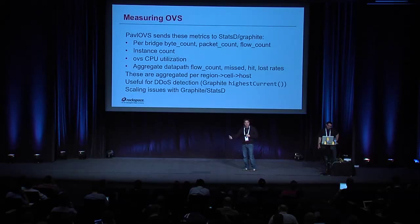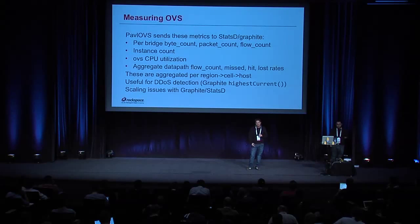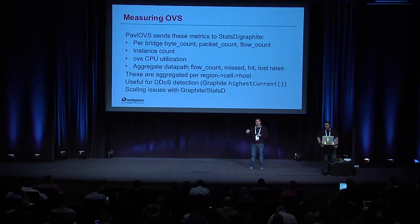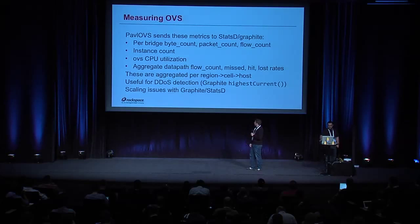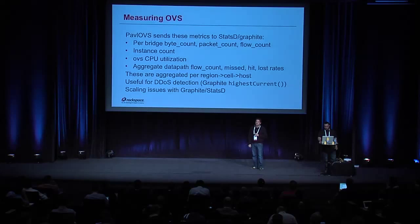We aggregate these metrics at the region, cell, and hypervisor level so you can get whatever granular view you need. It's really useful for DDoS protection — if somebody spikes and is orders of magnitude above other customers, there's a good chance they're a DDoS target. However, at our scale we're having problems scaling Graphite and StatsD to accommodate, because this is a ton of traffic — multiple data points for every single port on every single hypervisor in some of our larger regions.